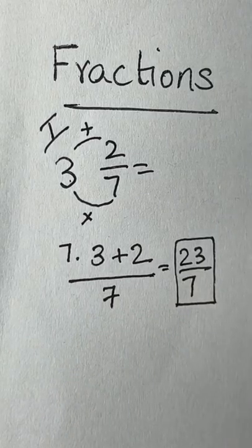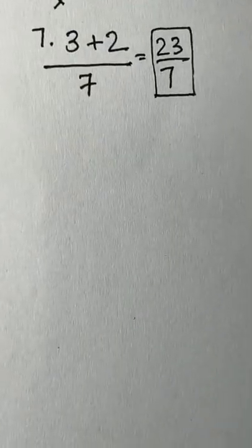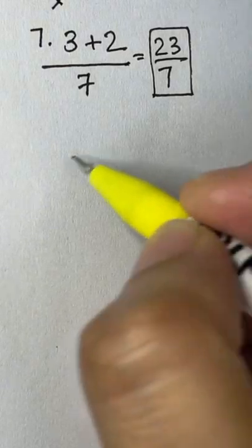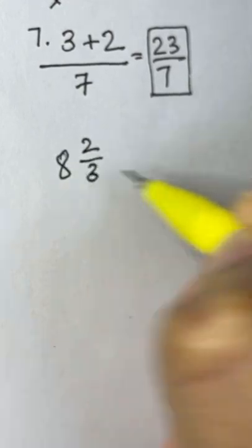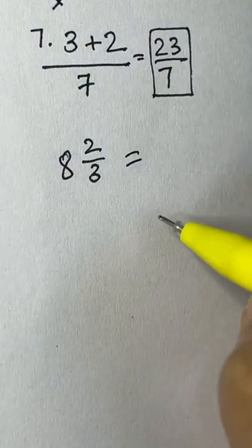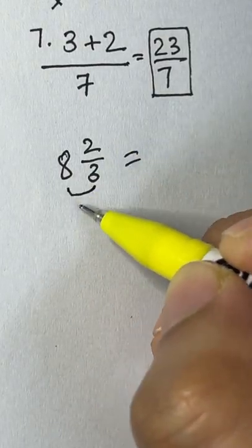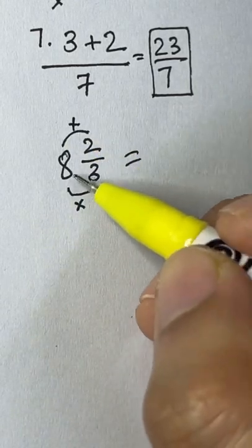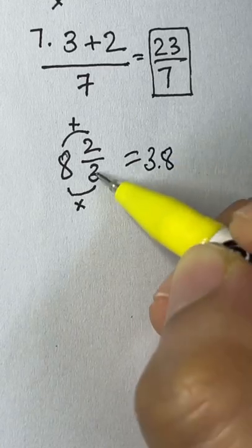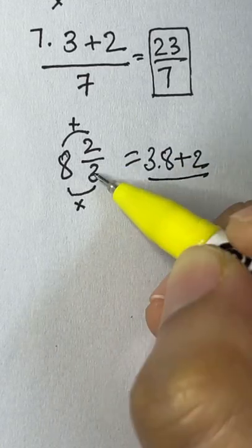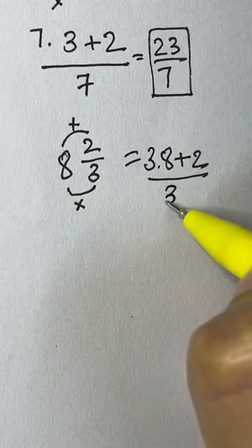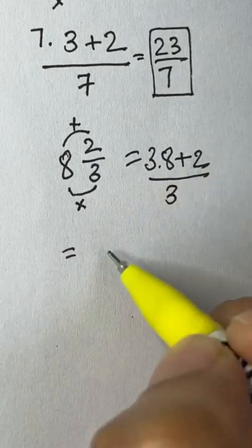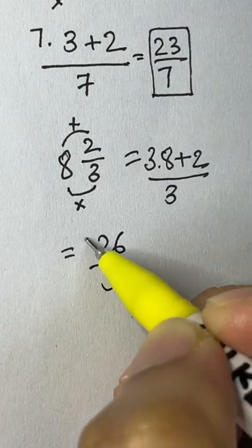Let's see one more example. If you have 8 and 2/3rds, we go in a cyclic way again: multiply and add the top. So 3 times 8 plus 2, divided by the denominator 3. 8 times 3 is 24, 24 plus 2 gives you 26 over 3. That's how you convert a mixed number into an improper fraction.